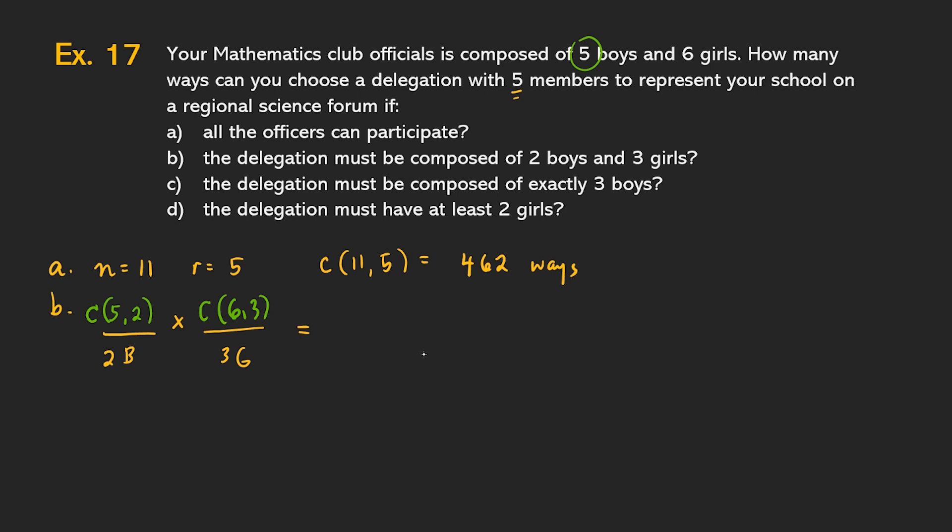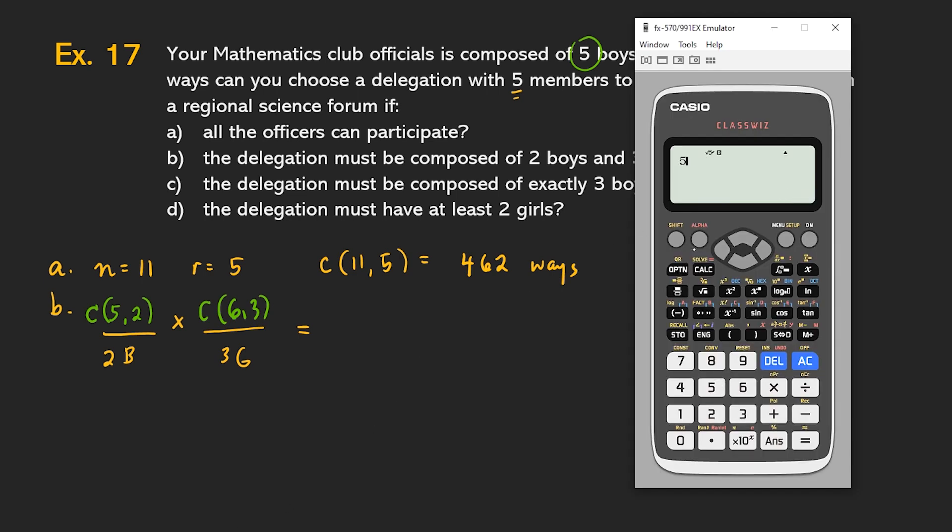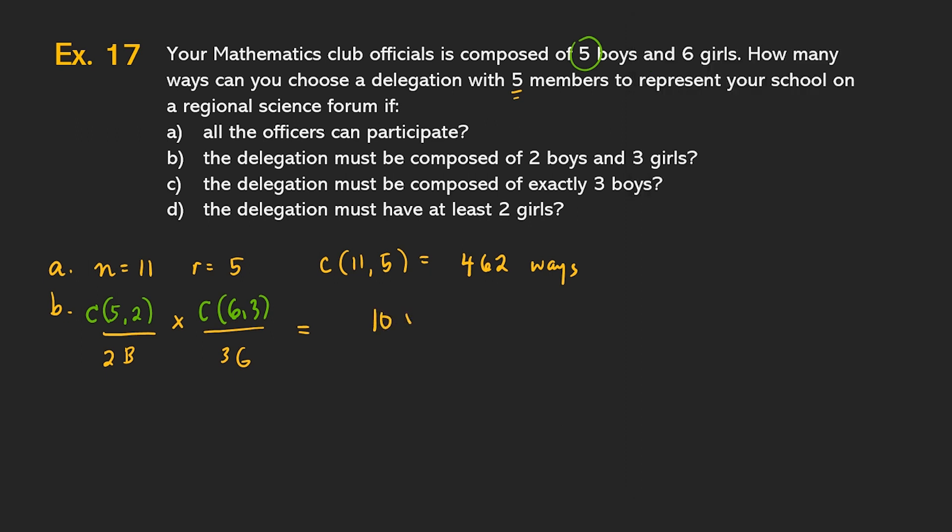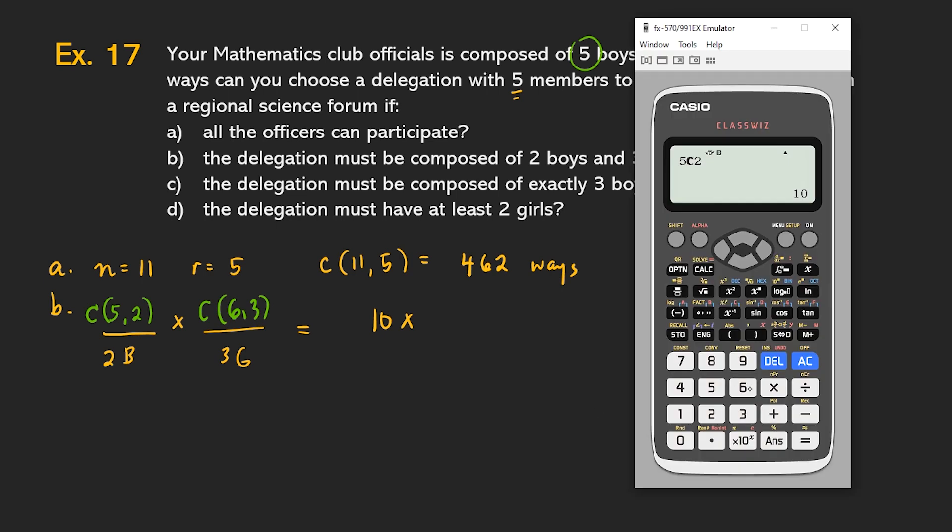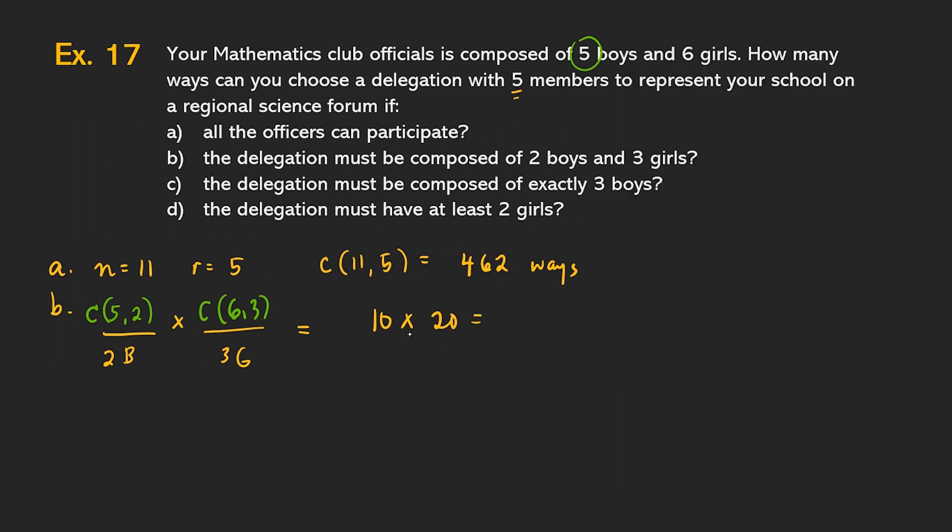Ano ang five combination two? So, let's again pull out our calculator. Five combination two is ten times six combination three. Six combination three. Twenty. So, ten times twenty, that's two hundred ways. So, there are two hundred ways of selecting two boys and three girls. Again, ang ginawa natin doon, pili muna tayo ng boys. And then, multiply it by the number of ways we can choose three girls from six. Okay. And apply natin yung multiplication rule.